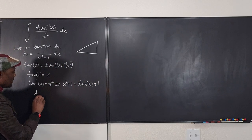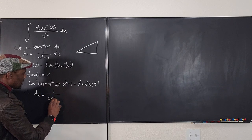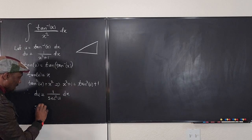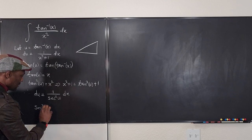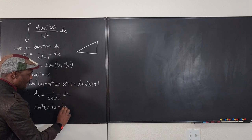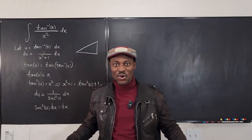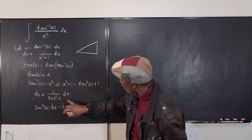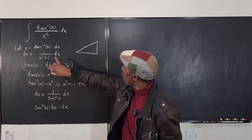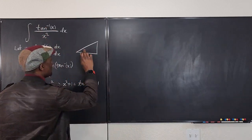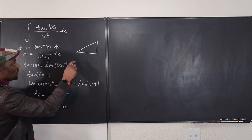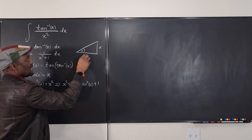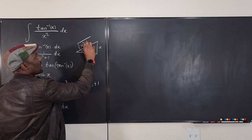Therefore, du = 1/sec²(u) · dx, and multiplying both sides by sec²(u) gives sec²(u) du = dx. Now we've gotten rid of everything in x: x² is tan²(u), and dx is sec²(u) du. From the triangle, since tan(u) = x — tangent is opposite over adjacent — we can also identify the hypotenuse as the square root of x² + 1.